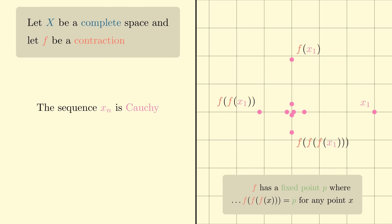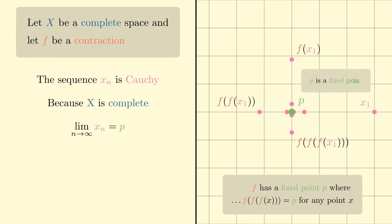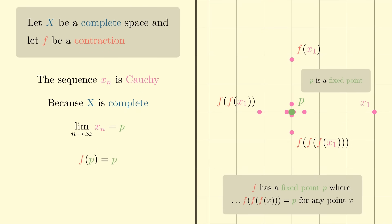That's the hard part of the proof done — the rest is easy. Because our sequence is Cauchy and our space is complete, we know that it converges to some point p. All we need to do is show that p is a fixed point of our contraction. We rewrite the limit by substituting in the recursive definition for x_n. Now because every contraction is continuous, we can pull f outside the limit, and we evaluate the limit inside f to be p. Therefore, f(p) equals p, and p is a fixed point of our contraction. So we've proved the theorem.